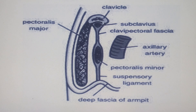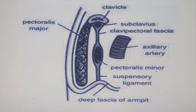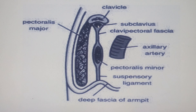Just below the clavicle, there is the subclavius muscle — the muscle that attaches below the clavicle. Now, if I cut and reflect the pectoralis major muscle, deep to it I find the pectoralis minor muscle. The subclavius and pectoralis minor muscles lie in the same vertical plane, so there is a fascial connection between them.